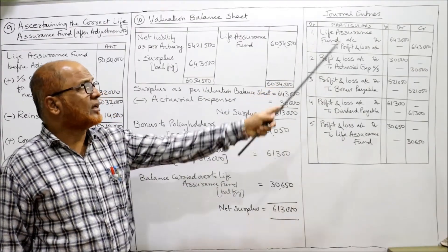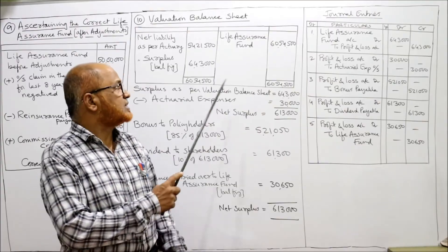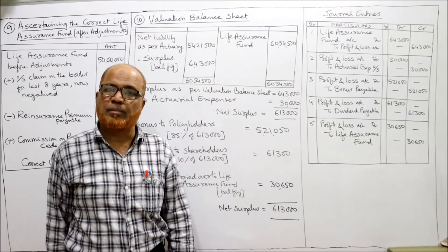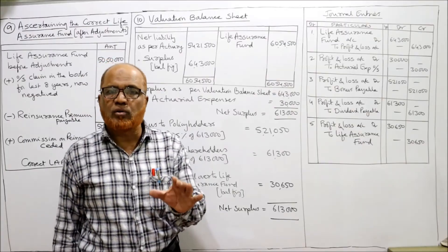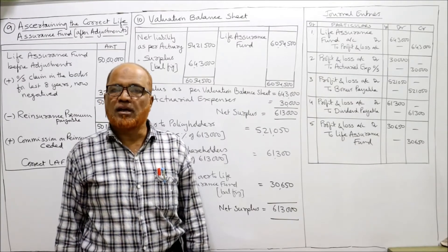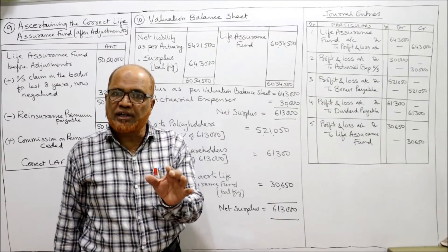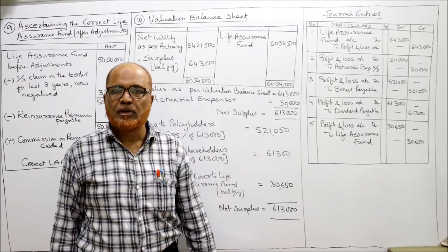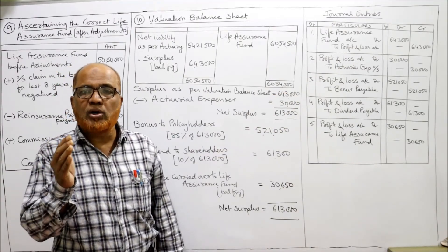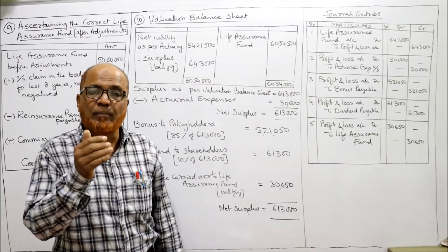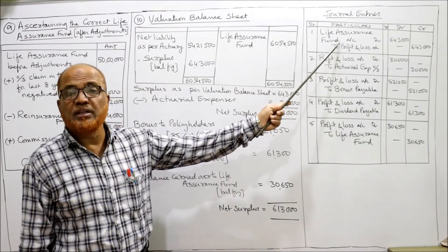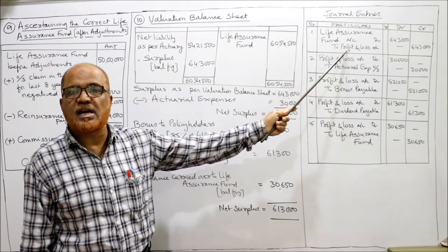Journal entries: First, we withdraw ₹6,43,000 from the life insurance fund into a temporary Profit and Loss account. Entry: Life Insurance Fund A/c Dr. to Profit and Loss A/c ₹6,43,000 — being the amount withdrawn from life insurance fund for declaring bonus to policyholders and dividend to shareholders. Next, Profit and Loss A/c Dr. to Actuarial Expenses Outstanding ₹30,000 — being the actuarial expenses due. Then, Profit and Loss A/c Dr. to Bonus Payable ₹5,21,050 — being the bonus payable to policyholders.